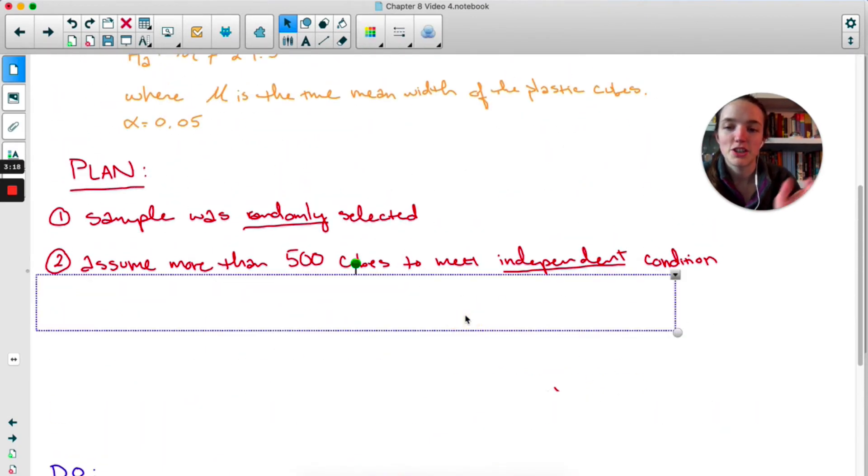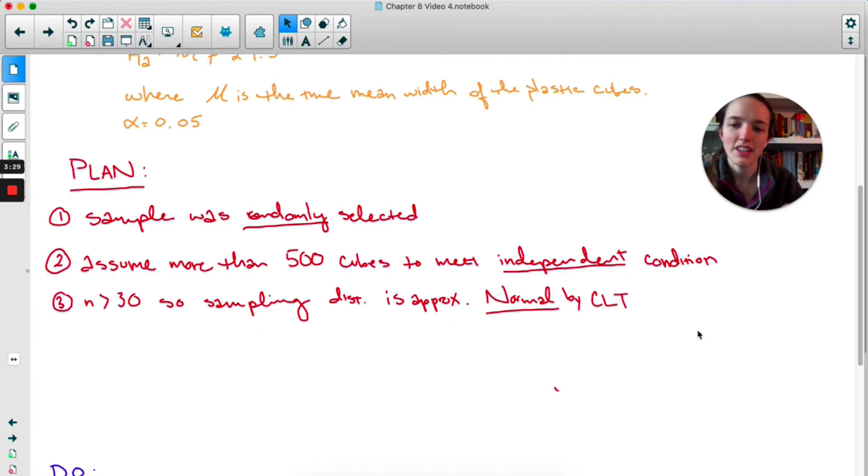And then lastly, we have to check the normal condition. Now remember, we're back to means now. For proportions, we are checking np and n(1-p). For means, you just have to use the CLT. If n is greater than 30, which in this case it is, the sampling distribution is approximately normal by the CLT. If it was less than 30, you would have to check to make sure there's no strong skewness. And if you get something where you're not quite sure, like if there is some strong skew when you make a graph, you can always say, this isn't approximately normal, but we'll proceed with caution and then do the rest of the problem.